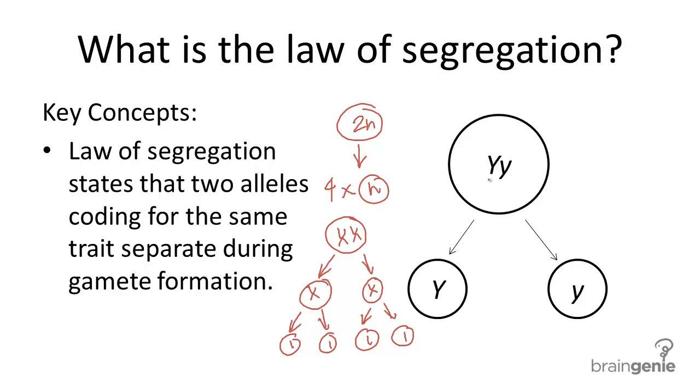For example, if you were talking about pea color, you have a yellow allele and a green allele. The yellow allele would be found on one homologous chromosome and the green allele on the other. When these homologous chromosomes separate into their separate gametes, one gamete will end up with the yellow allele and the other with the green allele.